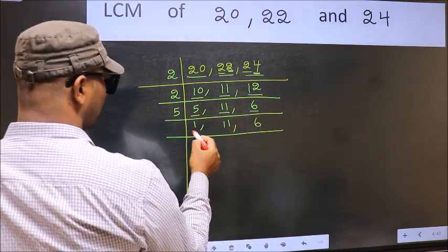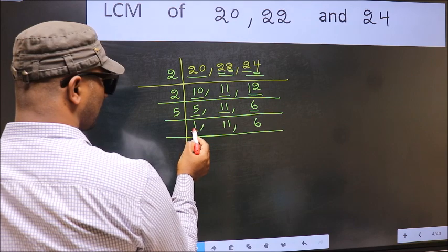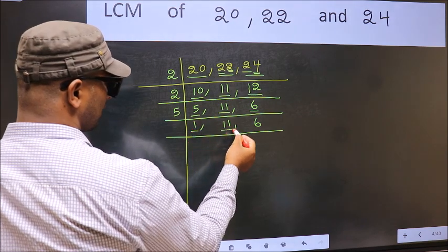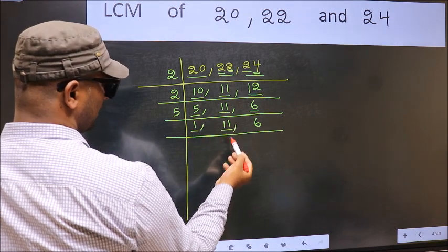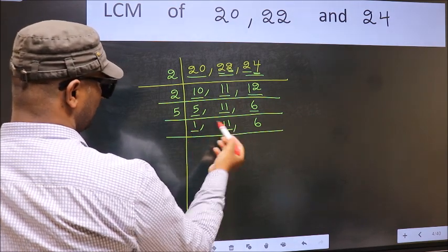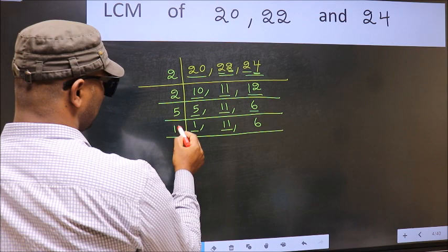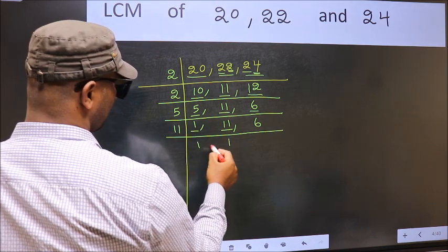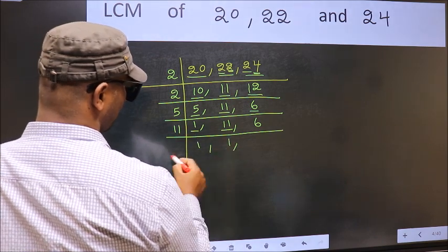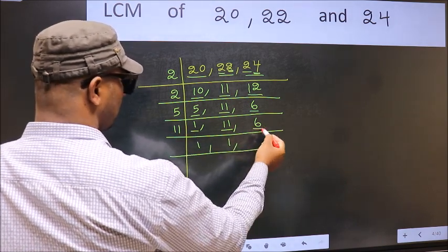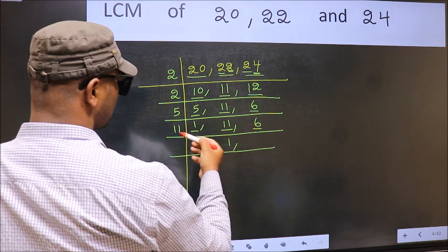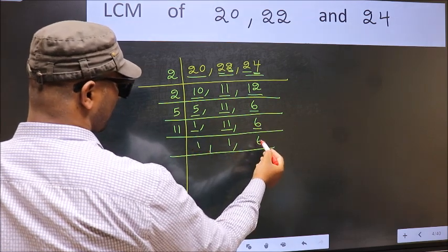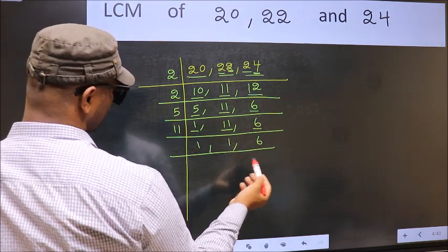Now we got 1 here, so focus on the other number 11. 11 is a prime number, so 11 once is 11. The other number 6 — not divisible by 11, so you write it down as it is.